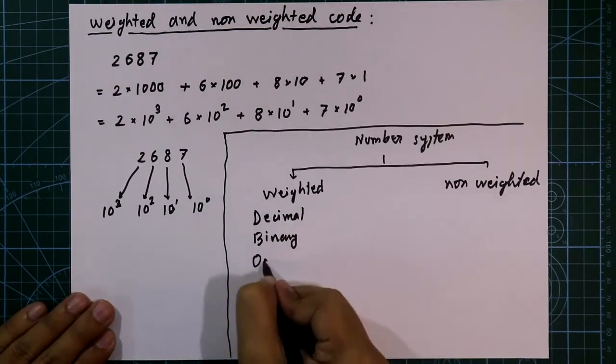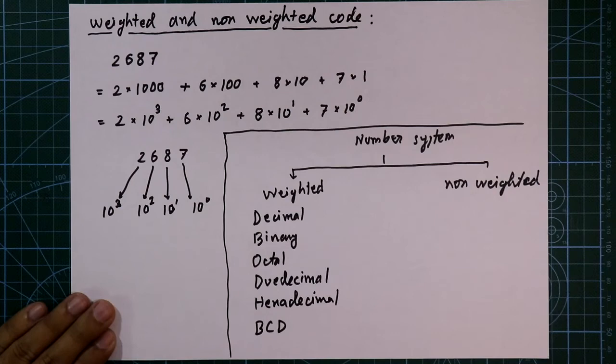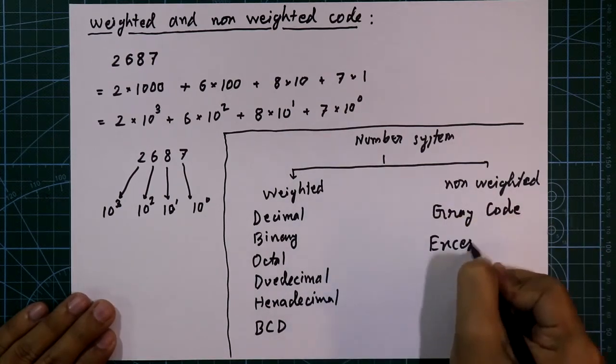The decimal, binary, octal, duodecimal, hexadecimal, and BCD, that is binary coded decimal, these are the examples of weighted code. And the non-weighted codes are gray code, XS3 code, etc.